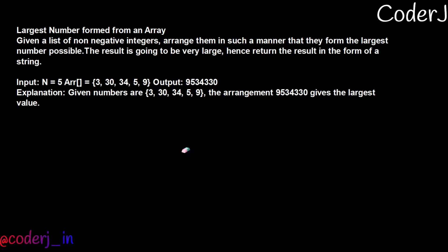Hello everyone, welcome back to my channel. Today's part of our ongoing must-do series, we will be attempting 'Largest Number Formed from an Array'. This is the question: given a list of non-negative integers, arrange them in such a manner that they form the largest number possible. The result is going to be very large, hence return the result in the form of a string.